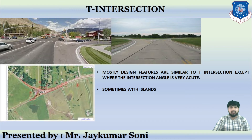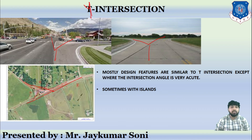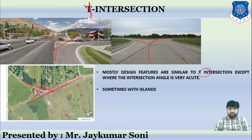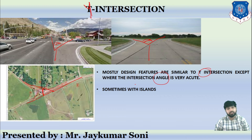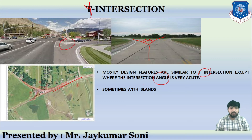Another type is the Y intersection. This is not T-shaped but Y-shaped. Sometimes it is considered as T, but usually it is classified as Y. Most design features are similar to T, which is why it is sometimes called a T-alternative or T intersection. One key difference is that the intersection angle is very acute. Sometimes islands are provided, and sometimes they are not.